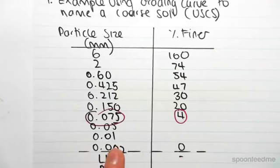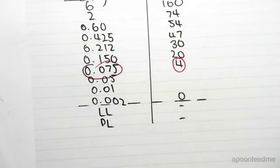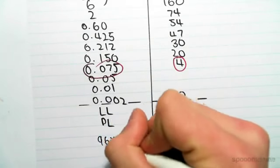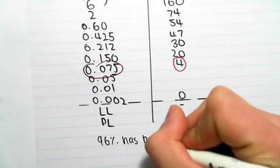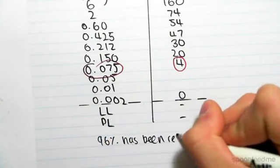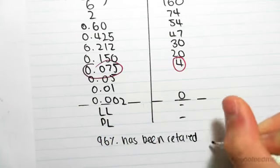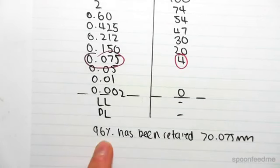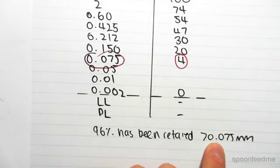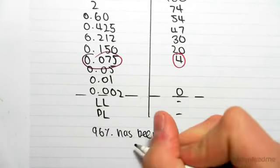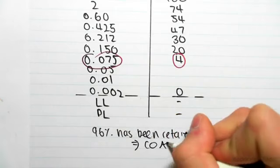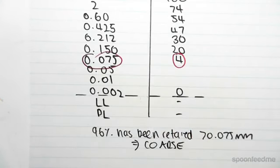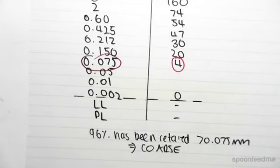If 4% has passed through 0.075, that means 96% has been retained above 0.075 millimeters. So 96% of our sample is greater than 0.075 millimeters, which tells us we're dealing with coarse material because the majority has coarse-grained particles.